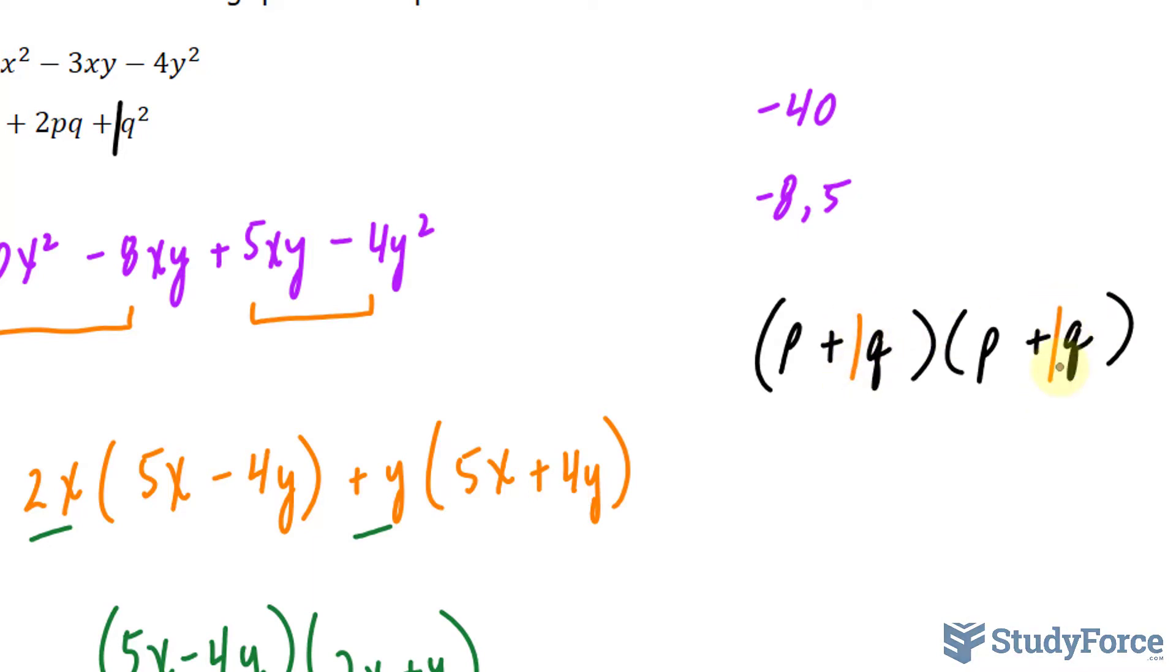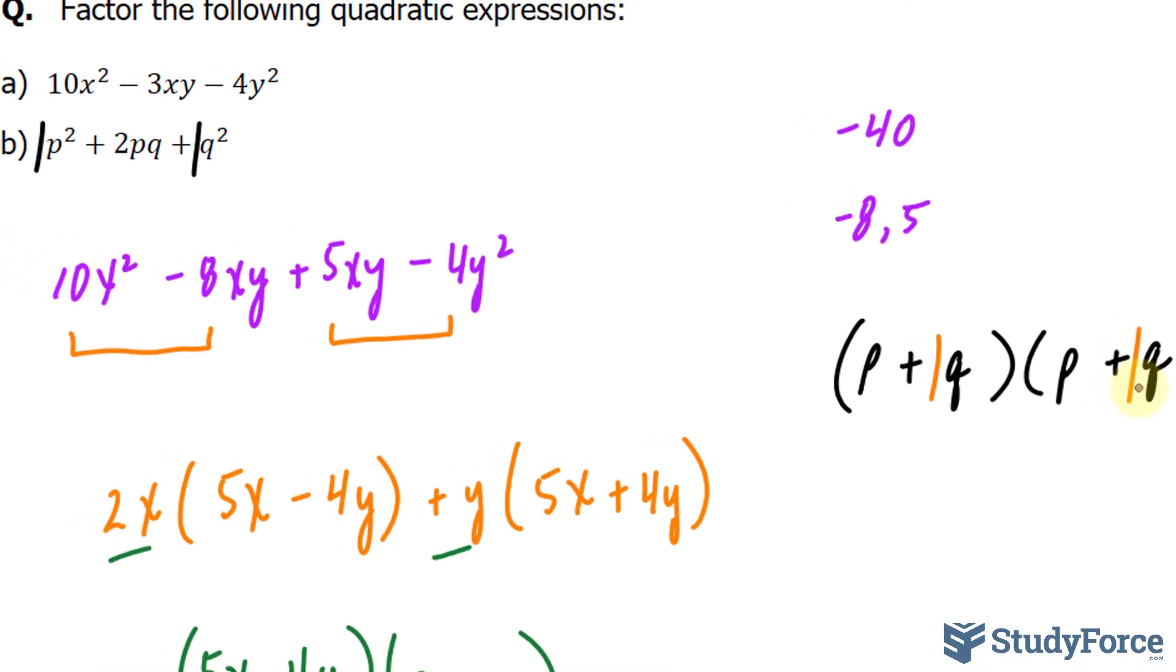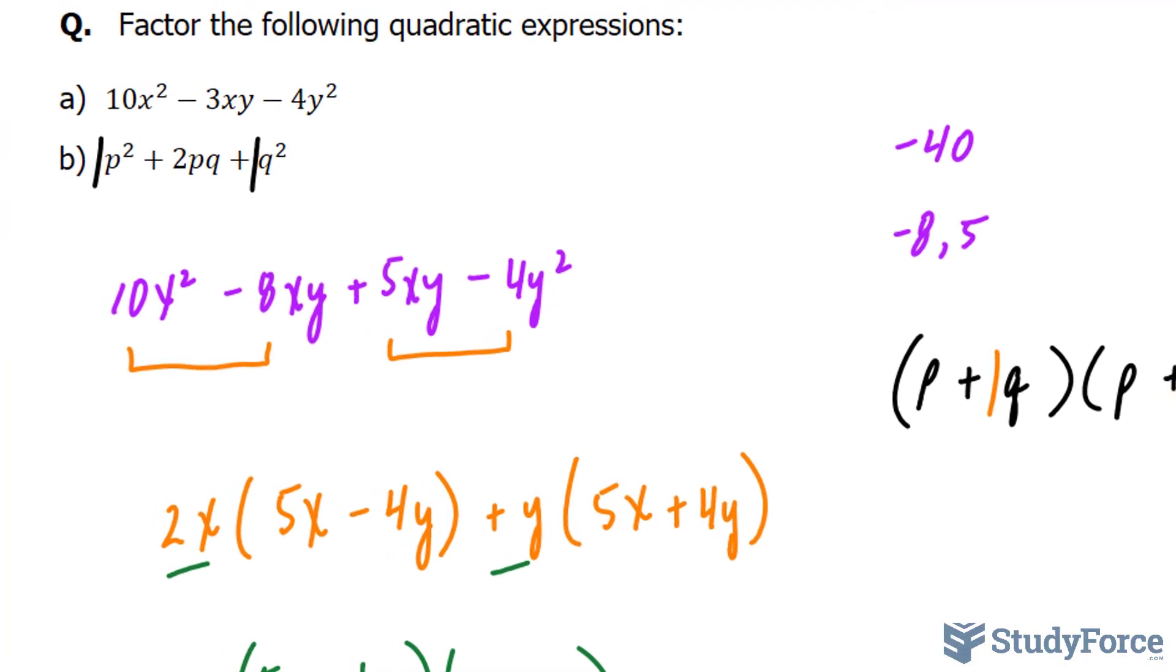And if you don't believe that this is the answer, you can always check and expand this expression. If you do, you'll certainly end up with what we started with. And so there you have it. That is how to factor a quadratic with two variables.